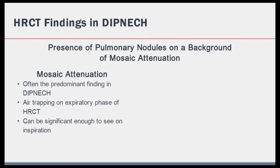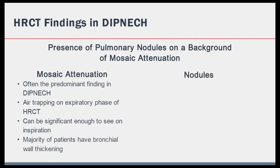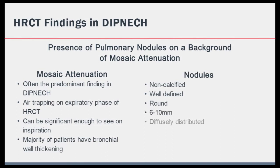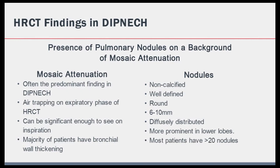The majority of patients also have evidence of bronchial wall thickening. Regarding the nodules in DIPNECH, they are usually non-calcified, well-defined, round, and usually measure between 6 and 10 millimetres. The nodules are distributed diffusely and are more prominent in the lower lobes, and patients usually have more than 20 nodules present.